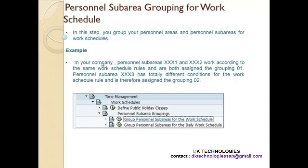For example, personal sub-areas XXX1 and XXX2 probably have the same work schedule rules, so they are assigned to grouping 01. Now suppose personal sub-area XXX3 has totally different conditions for work, so it is assigned to a separate grouping because its working pattern is not equal to personal sub-areas 1 and 2. So we put it in a separate bucket — a separate group. This is basically personal sub-area grouping for work schedule.